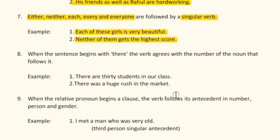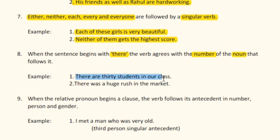Rule number eight: when the sentence begins with 'there', the verb agrees with the number of the noun that follows it. For example, 'There are thirty students in our class.' Second example: 'There was a huge rush in the market.'